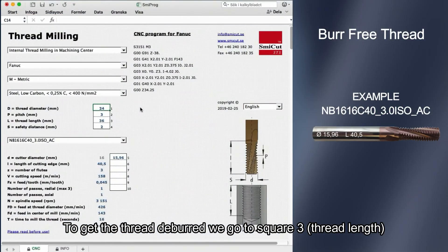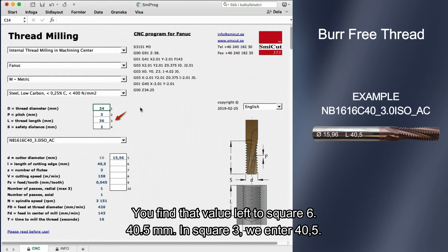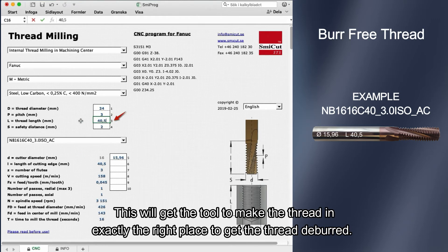To get the thread deburred, we go to square three, thread length. Here we enter the value of the complete cutting length of the tool we are using. You find that value left to square six, 40.5 millimeter. In square three, we enter 40.5. This will get the tool to make the thread in exactly the right place to get the thread deburred.